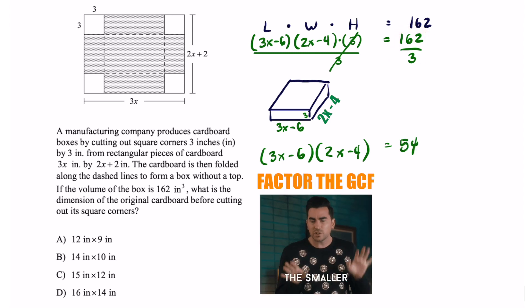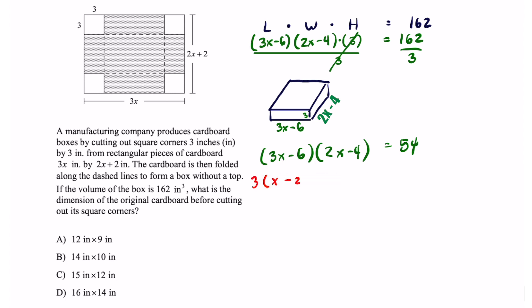So now I'm left with 3x minus 6 times 2x minus 4 equals 162 divided by 3 equals 54. If you look at this binomial you can factor out a 3 then you're going to be left with x minus 2. This one you can factor out a 2 and you're left with x minus 2 once again equals 54. And since this is all multiplication right here we can multiply these two values to get 6.